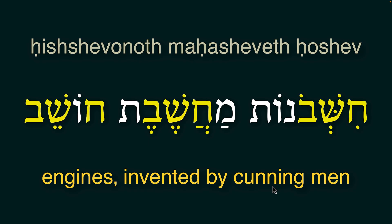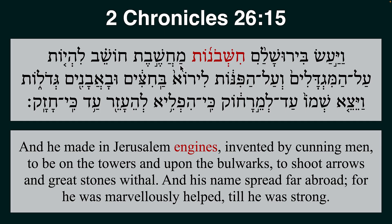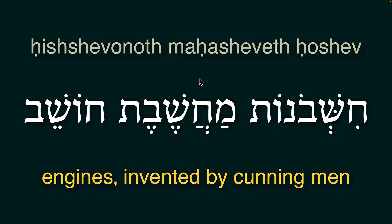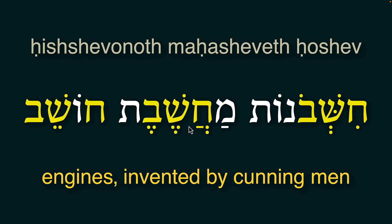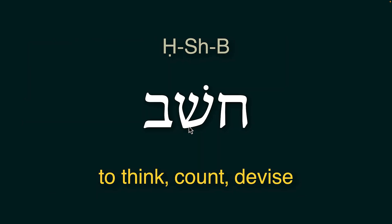Let's look at this root. Khishavonoth has the root Kheth-Shin-Bet. Similarly, Mahshavet has Kheth-Shin-Bet. Khoshev also is the same root — you can see the root very clearly in the whole sentence. These three words in this sentence are what we are actually looking at. The root Khashav means to think, to count, to calculate, or to devise. All three words come from this root and they are all related. But why did he use three different words for the same thing? Let's come to that.